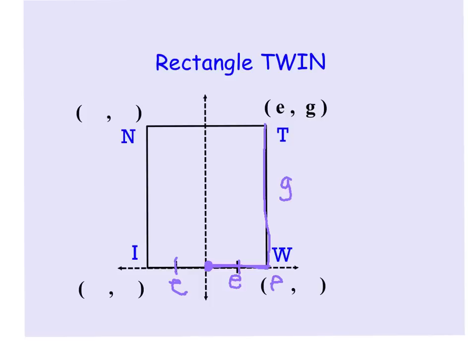So this is the point E zero, and because we're going to the left to get to I, that's going to be the point negative E zero.